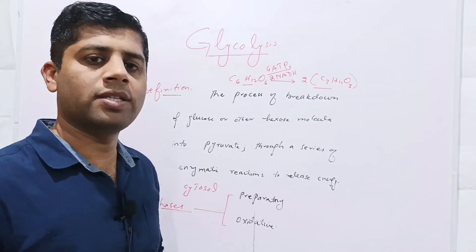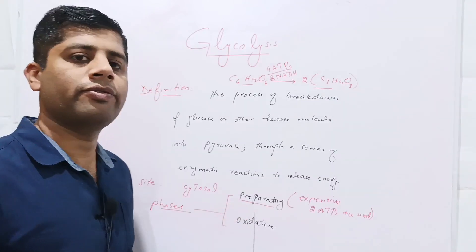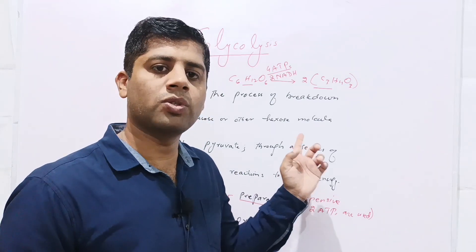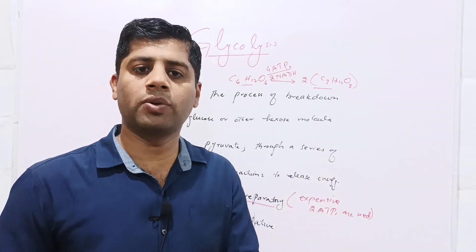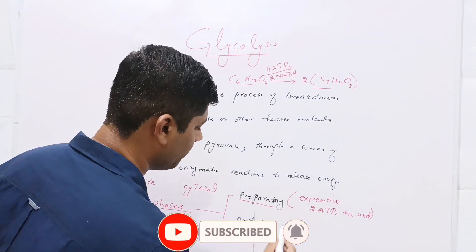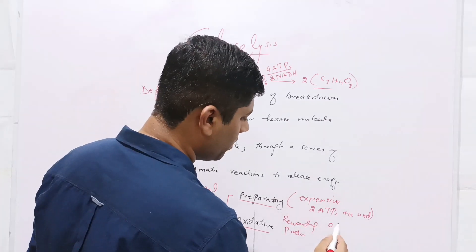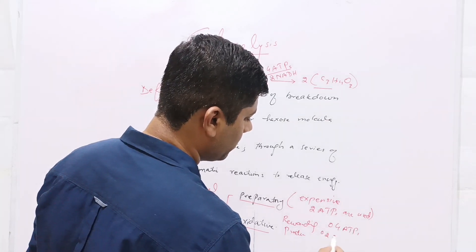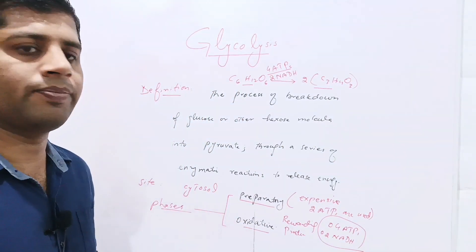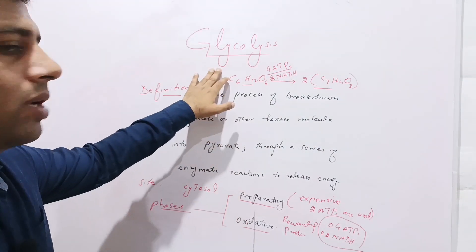The metabolic mechanism of glycolysis is subdivided into two phases: the preparatory phase and the oxidative phase. The preparatory phase is an expensive phase — it uses two ATP molecules and prepares the glucose molecule for further oxidation into pyruvate. The oxidative phase is a rewarding phase because it produces energy: four ATPs and two NADH molecules. Both phases will be discussed in today's lecture.